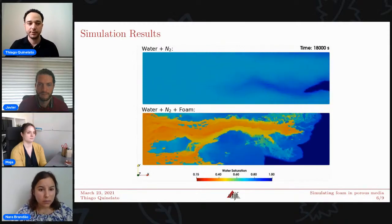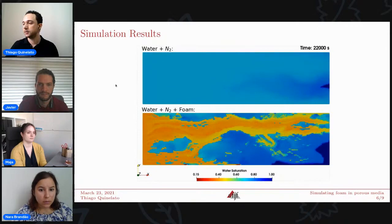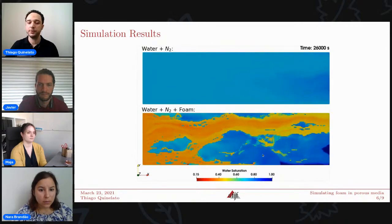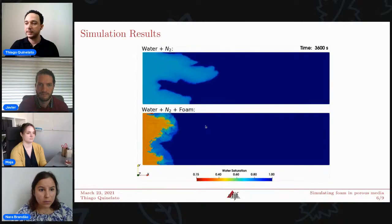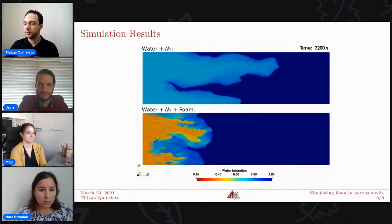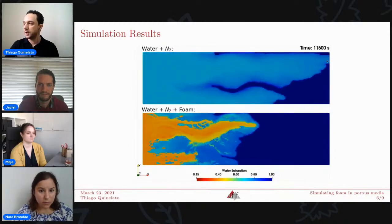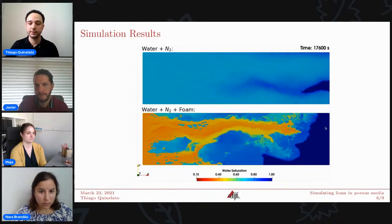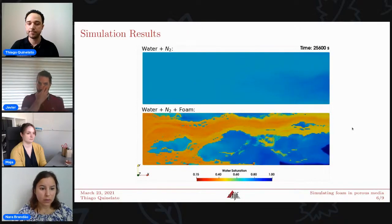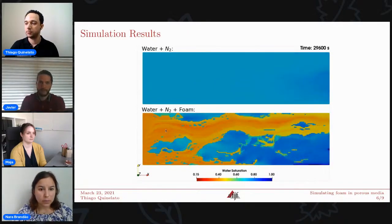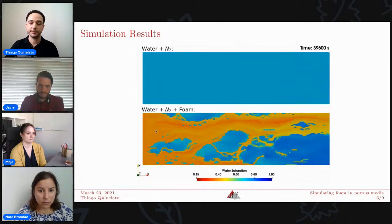So, here I show two water saturation profiles. In the top, we are simulating the injection of just water and gas. So, there is no foam in this first case. In the bottom, we consider that there is plenty of surfactant in the water phase to form foam. So, as foam has a lower mobility than gas, it can improve the sweep efficiency in this second case. We can see that when foam is created, the gas front is more regular than in the first case. And the gas breakthrough also occurs later than in the first case. And also, a much lower water saturation is observed inside the domain when foam is present.